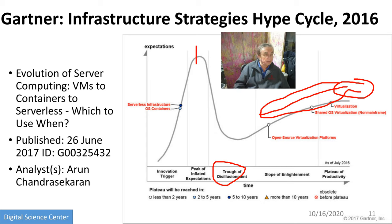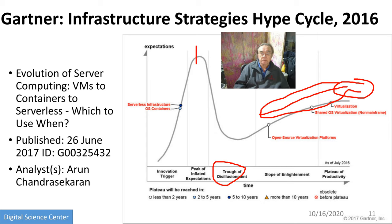I remember when I first went to presentations on clouds, people were being controversial saying there'll be 20% cloud use this year or next year. Now it's essentially 50%, and people just shrug and accept it — or don't accept it because they've closed their eyes. Gartner has a paper on the evolution of server computing, which I got the previous slide from.